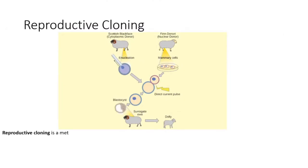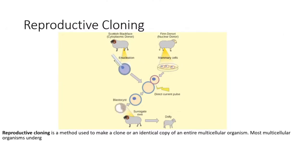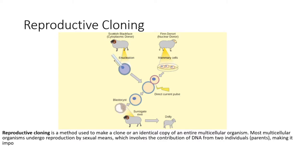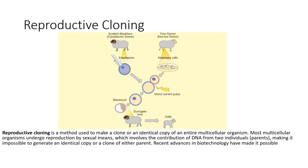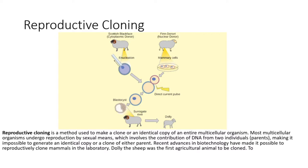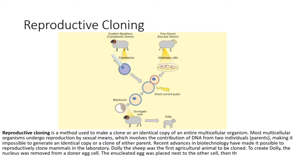Reproductive cloning is a method used to make a clone, or an identical copy of an entire multicellular organism. Most multicellular organisms undergo reproduction by sexual means, which involves the contribution of DNA from two individuals — parents — making it impossible to generate an identical copy, or a clone, of either parent.